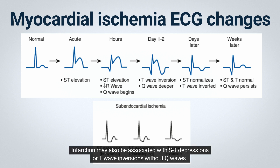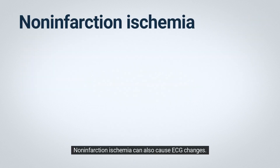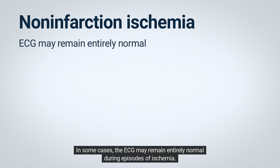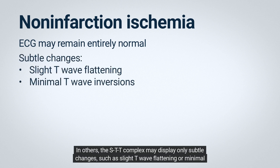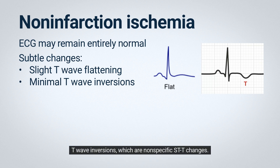Infarction may also be associated with ST depressions or T wave inversions without Q waves. Non-infarction ischemia can also cause ECG changes. In some cases the ECG may remain entirely normal during episodes of ischemia; in others the ST-T complex may display only subtle changes such as slight T wave flattening or minimal T wave inversions, which are non-specific ST-T changes.